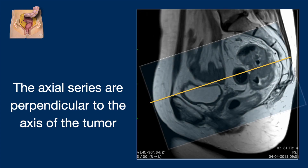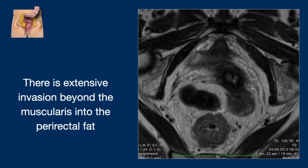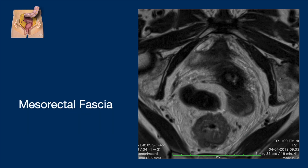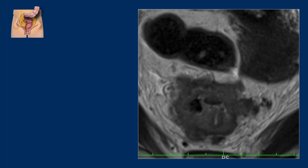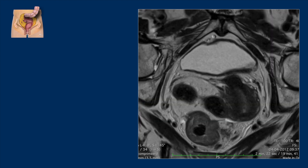The axial series are perpendicular to the axis of the tumor. There is a very irregular bowel wall, which means extensive invasion beyond the muscularis and into the perirectal fat. Regarding the mesorectal fascia on the dorsal side, we can see that the tumor is within one millimeter of the mesorectal fascia, so we must assume that the mesorectal fascia is involved. On the left side, there is obvious continuation of tumor signal into an adjacent vessel, indicative of extramural vascular invasion — and also here.